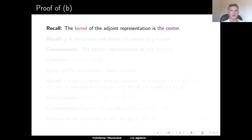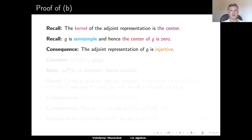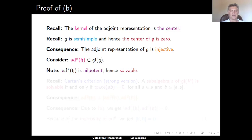Let's do Part B. Recall that the kernel of the adjoint representation of any Lie algebra is the center of that Lie algebra. Also recall that the center of any semi-simple Lie algebra is zero. Consequently, the adjoint representation of any semi-simple Lie algebra is injective. So consider the image of our Cartan subalgebra H under the adjoint representation of G — this realizes H as a subalgebra inside GL(G). By definition a Cartan subalgebra is nilpotent, so this image ad G applied to H is also nilpotent and hence solvable.